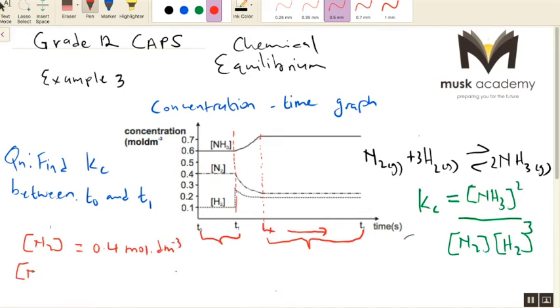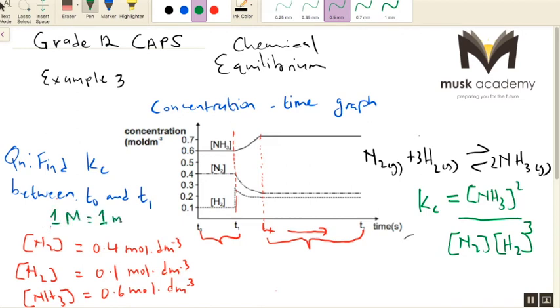And then we look at the concentration of hydrogen. Concentration of hydrogen, we will have 0.1 mole per DM3. And then we look at the concentration of the product, which is ammonia. We will have 0.6 mole per DM3. Sometimes they can write it as molarity. So 1 molarity is equal to 1 mole per DM3. So these are just the units for concentration. So when you see them, don't be confused.